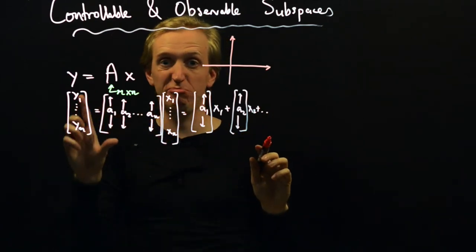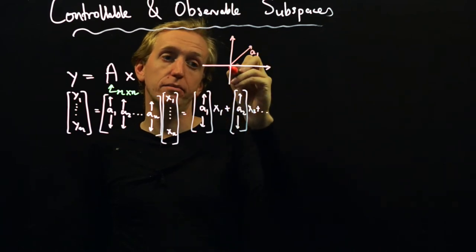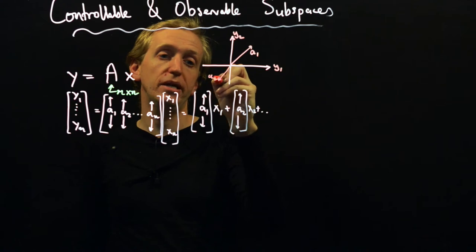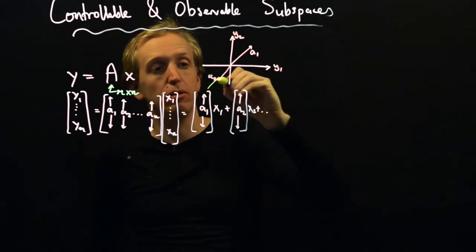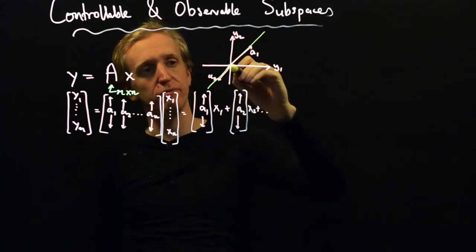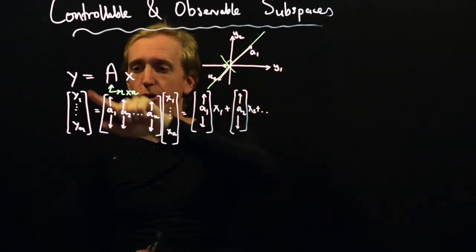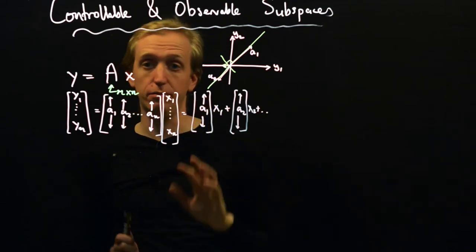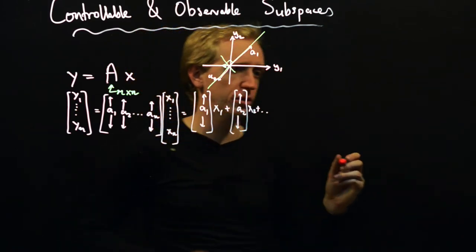Let's draw a silly cartoon picture. Say M is 2, so the output is two-dimensional — these A's are vectors with two entries. So this vector here is A1 and this one is A2. X1 is just some weighting, so X1 times A1 can give us any point on this line, and similarly X2 times A2 can give us any point on this line. But because I've drawn both of these lines pointing in the same direction, only values of Y that lie on this line would have a solution to this particular equation if we only had two columns in our matrix A.